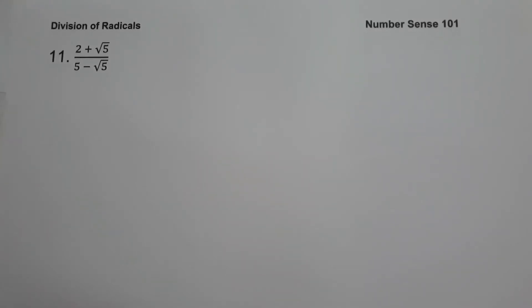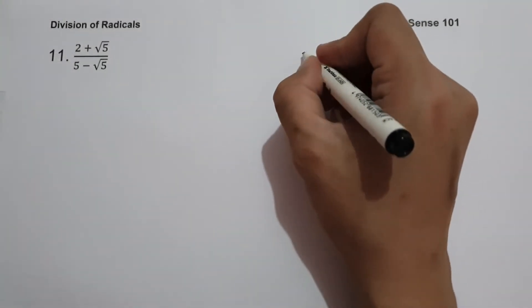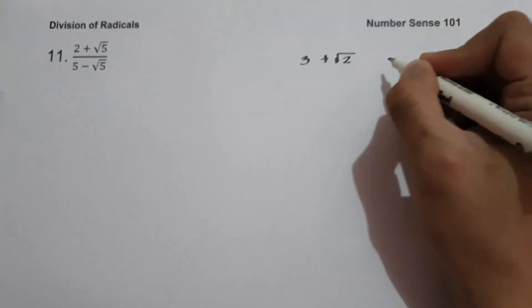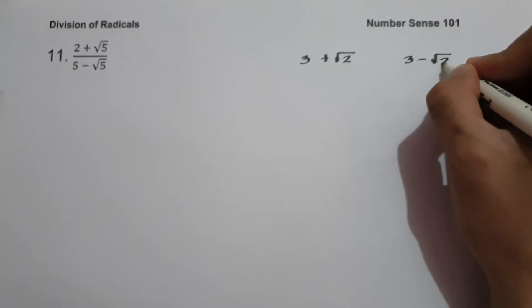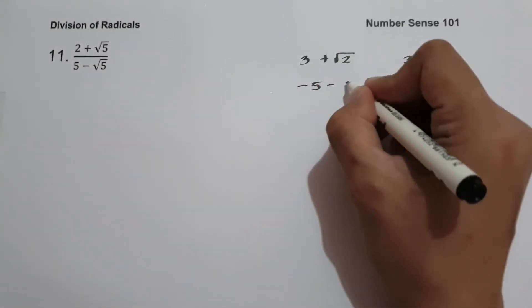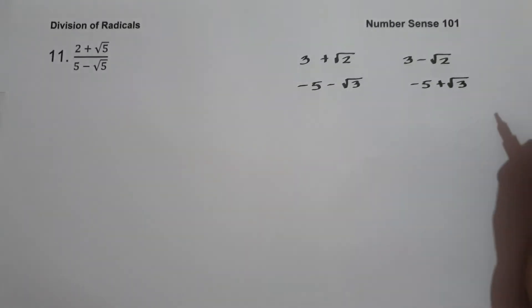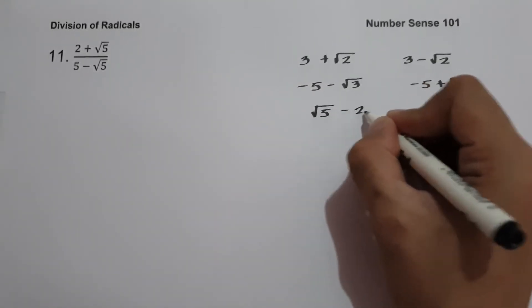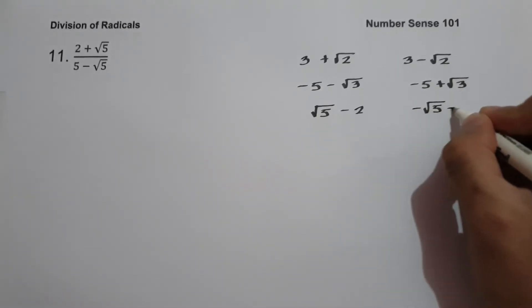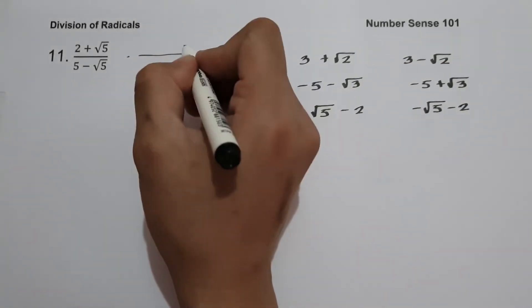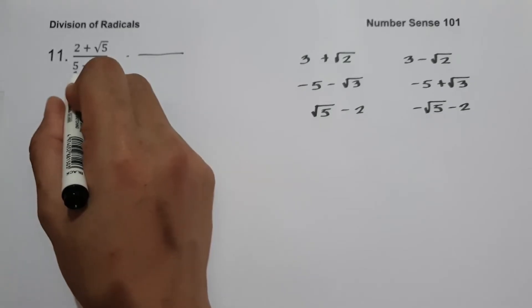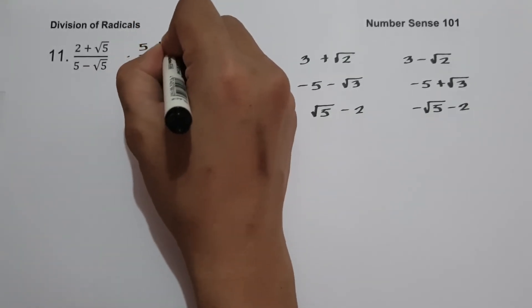On example number eleven, we have 2 plus square root of 5, all over 5 minus square root of 5. Our denominator is a binomial, so to eliminate the radical sign we use conjugates. For example, the conjugate of 3 plus square root of 2 is 3 minus square root of 2; the conjugate of negative 5 minus square root of 3 is negative 5 plus square root of 3; and the conjugate of square root of 5 minus 2 is negative square root of 5 minus 2. So we multiply by the conjugate of the denominator, which is 5 plus square root of 5.